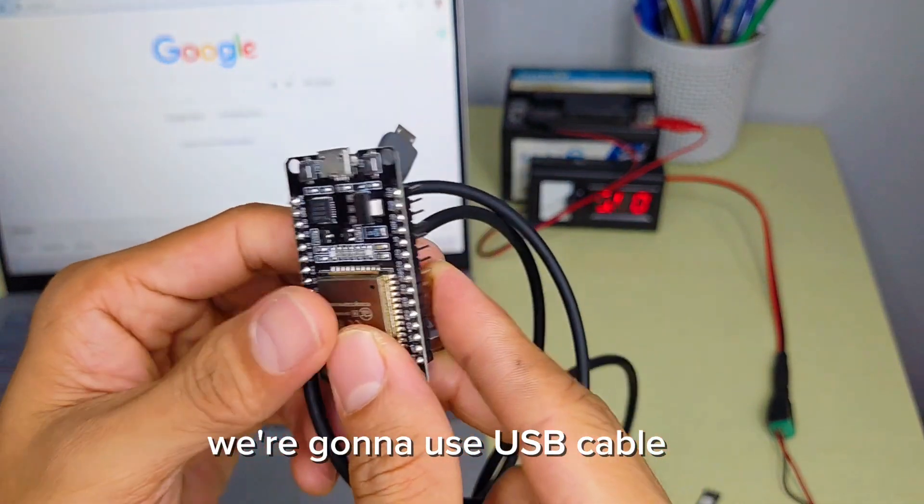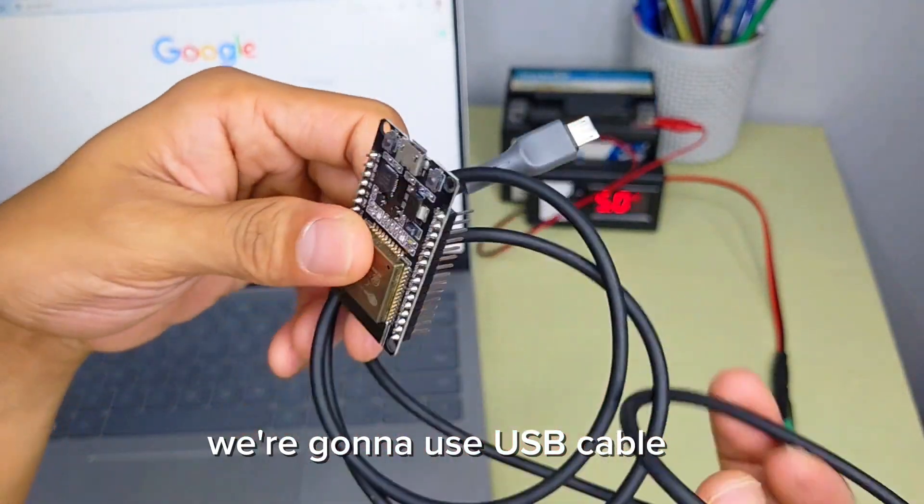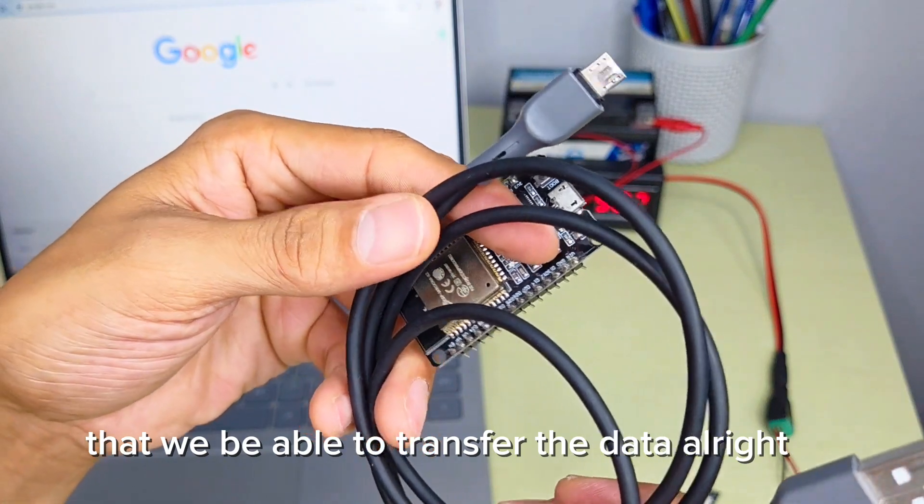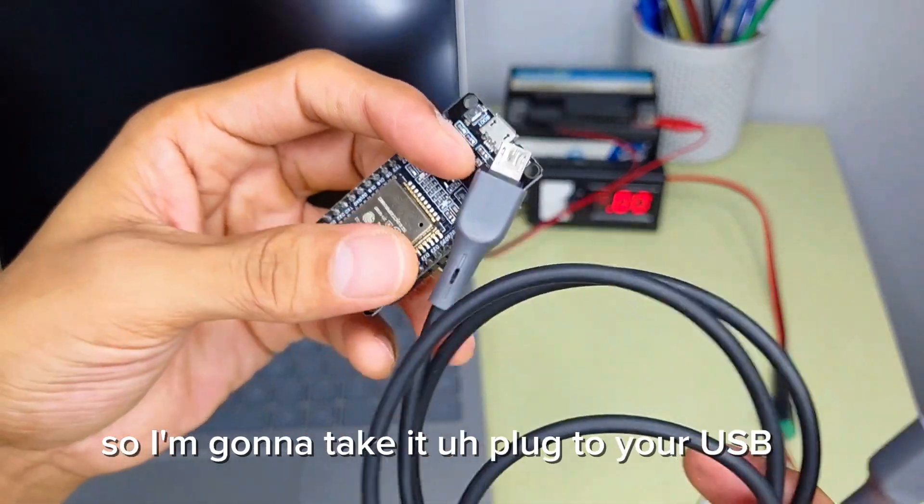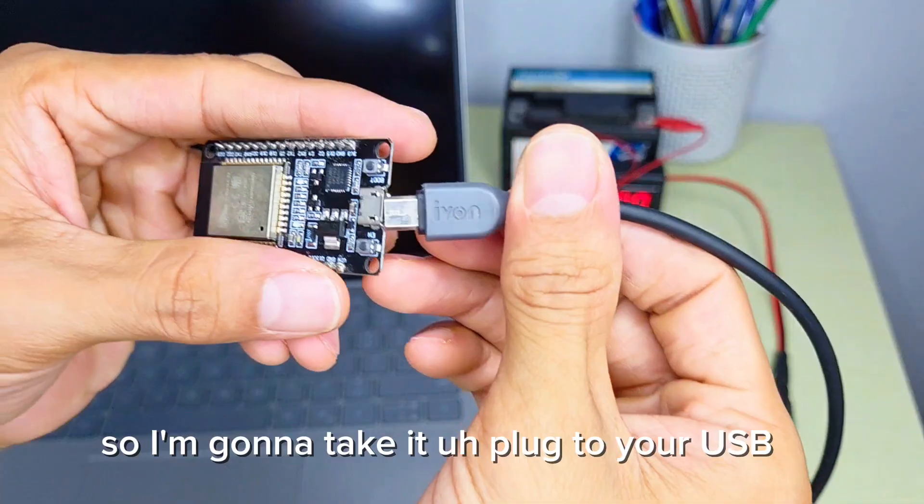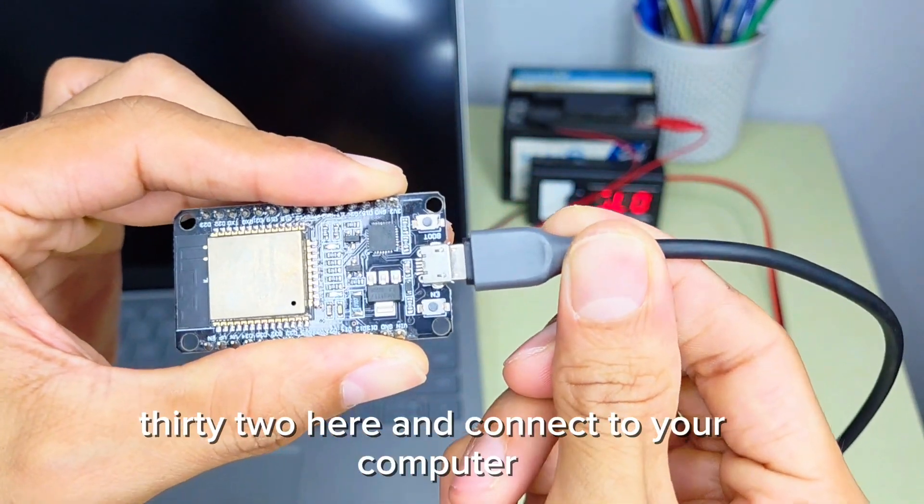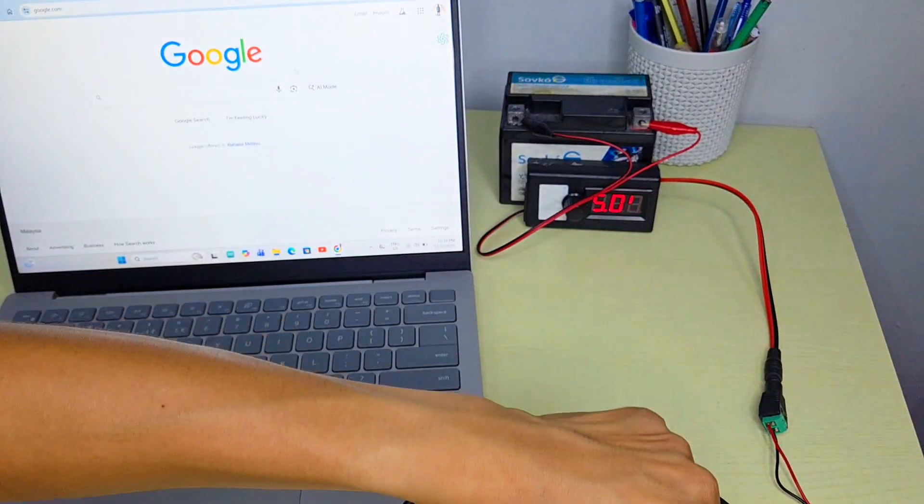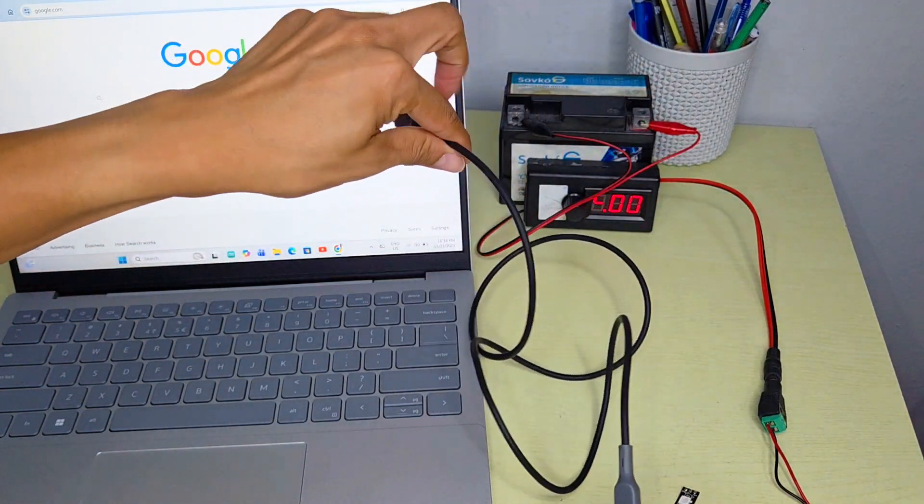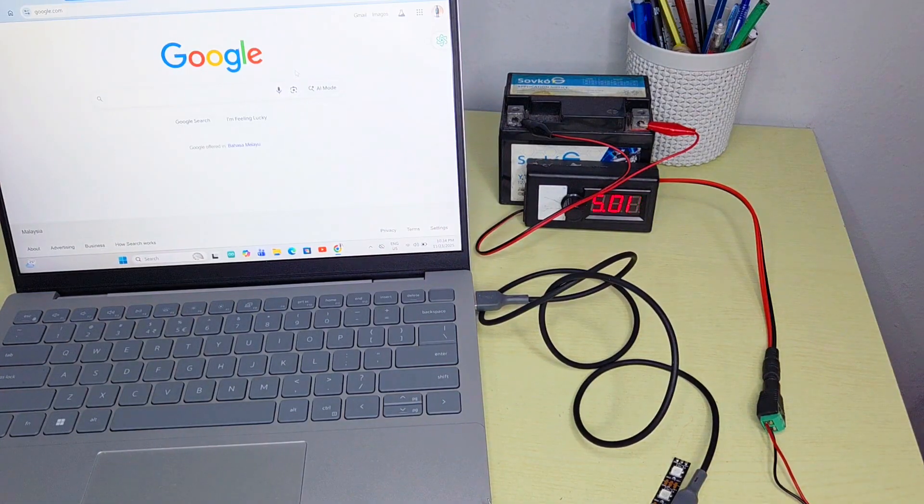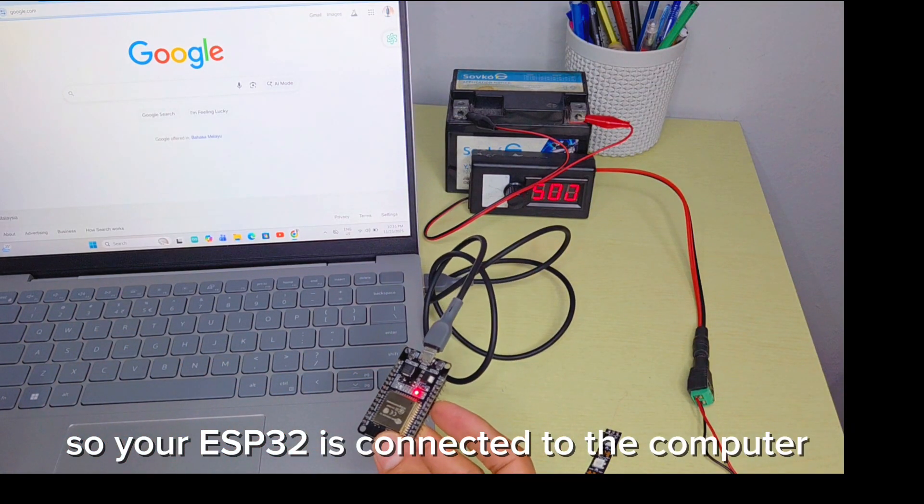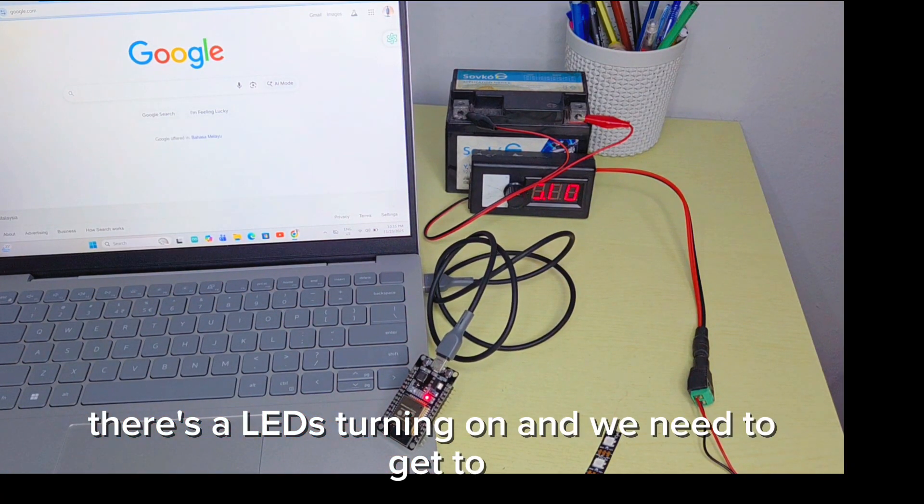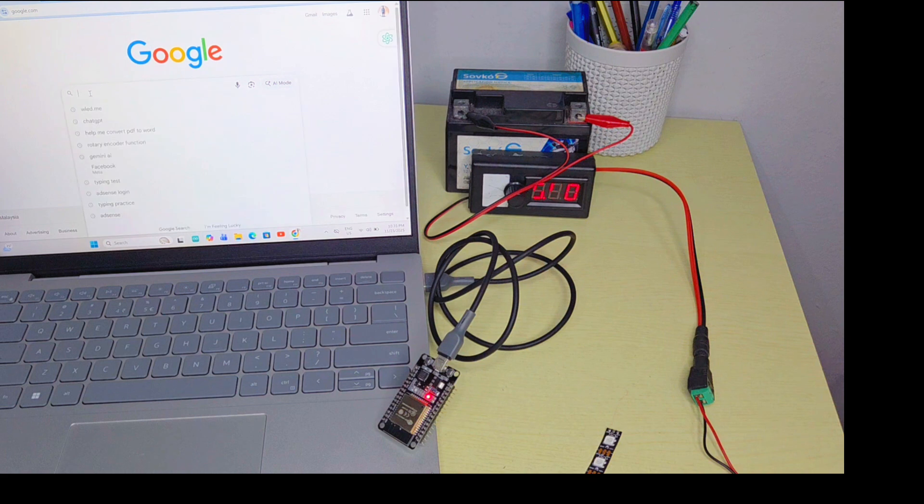We're going to use a USB cable. You need to make sure you are using the right USB cable that will be able to transfer the data. Plug it to your ESP32 and connect to your computer. The ESP32 is connected and working fine, this LED is turning on.